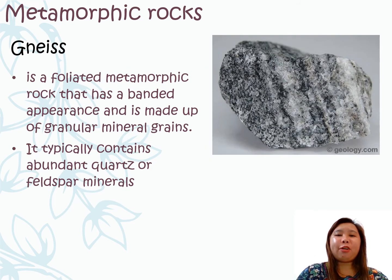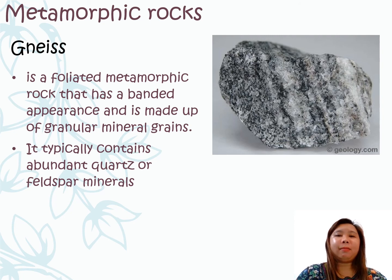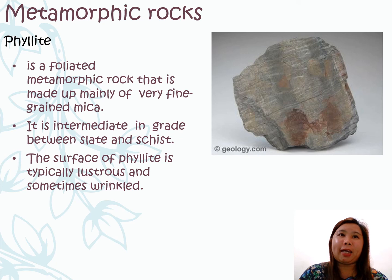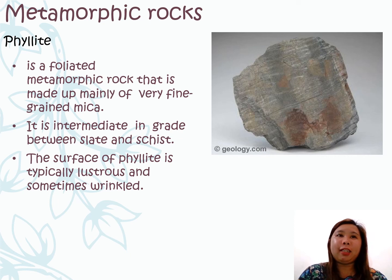Gneiss is a metamorphic rock that has a banded appearance and is made up of granular mineral grains. This kind of rock typically contains quartz or feldspar minerals. Another example of metamorphic rock is the phyllite. Phyllite is a foliated metamorphic rock that is made up mainly of very fine-grained mica. It is the intermediate grade between the slate and the schist. The surface of phyllite is typically lustrous and sometimes wrinkled.